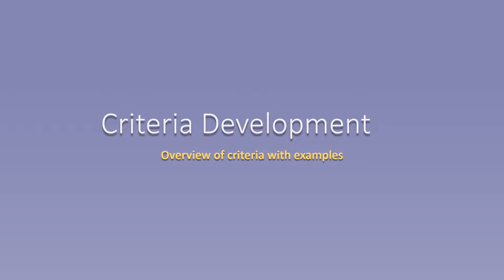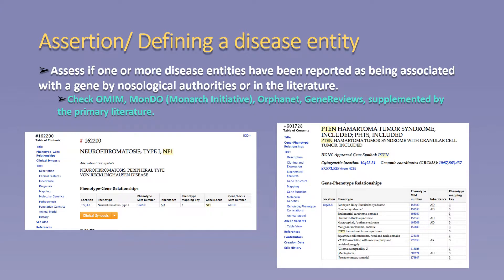Now I will review how the criteria were developed with examples. The first criterion is assertion, or defining a disease entity. A curator should assess if one or more disease entities have been reported in association with the gene of interest. This can be done by reviewing nosological and ontological sites such as OMIM, Orphanet, and Monarch Initiative. Gene Reviews is another great resource. The primary literature can be used as a supplement and may be essential in newly associated gene disease relationships. On the left, we find that the gene NF1 is associated with a single disease entity per OMIM, being neurofibromatosis type 1. This example falls under our general principle that genes associated with a single entity should be curated only for that entity and not split unless the other criteria are met.